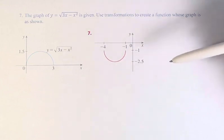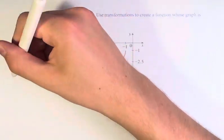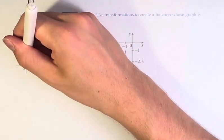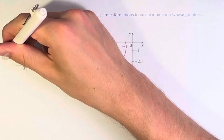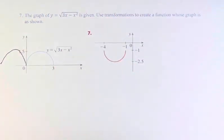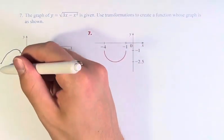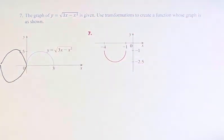So we have reflections and we have shifts. We can notice that if we were to take this function and reflect it about the y-axis, it would look something like this, obviously not a perfect graph. And then if we reflect it again over the x-axis, it would look like this.